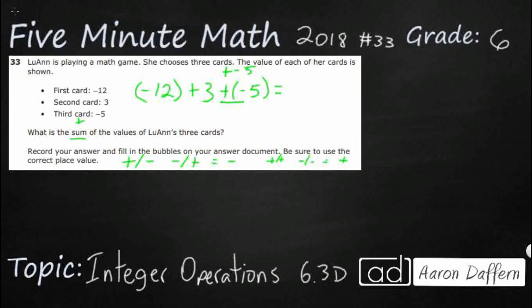So we have negative 12 — I'll just keep this as negative 12. We can drop the parentheses since there's no operation in front of it. Plus 3 is fine. And plus negative 5: since that is a positive and a negative, remember a positive and a negative always results in a negative, so plus negative is the same as subtracting. So we've got negative 12 plus 3 minus 5.